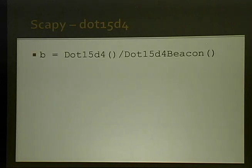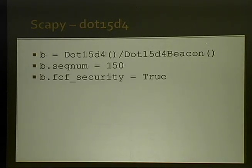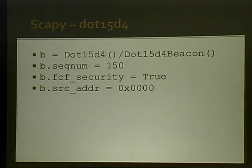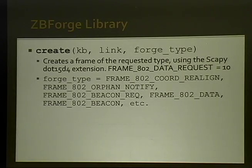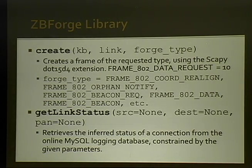With the Scapy extension, you initialize an instance of a beacon, set the sequence number, turn on the frame control field security bit — which automatically adds the auxiliary security header — and setting the source address will also set the frame control field source addressing mode based on proper length. You fire up a KillerBee instance and inject the assembled string. If that's still not easy enough, because you might not know all the values in the field, we have the ZBForge library. Functions like 'create' take the frame type and a link variable retrieved from 'get_link_status,' doing a database query and inferencing — like what the next sequence number should be, or what PAN or security mode is in use — and plugging those in automatically.